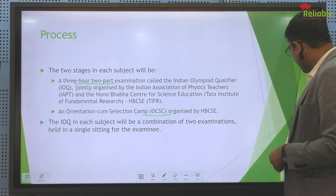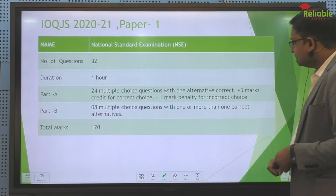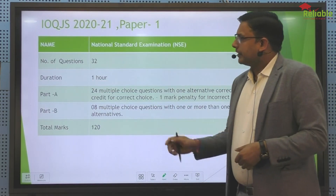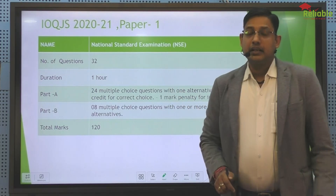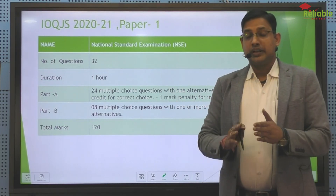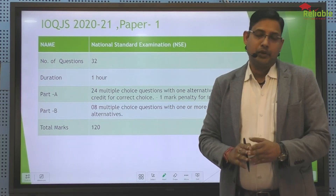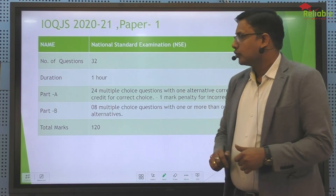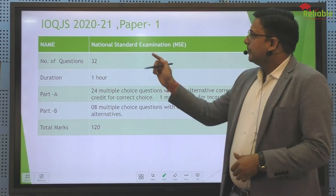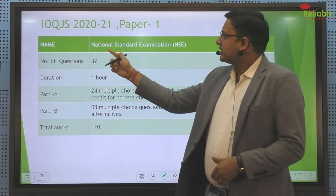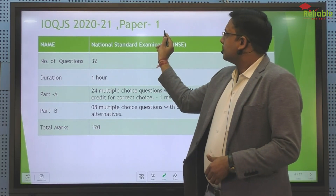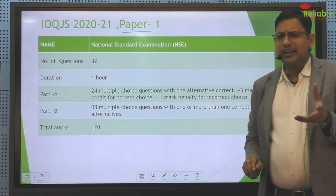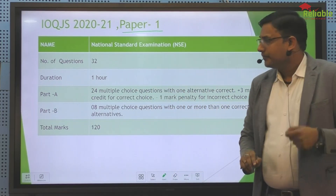Let us see what the paper pattern was. This paper pattern was given in the student browser. Yesterday, the 2:30 to 3:30 paper was done — that was the first paper, Paper 1, which stands for NSEJS level. The total was 32 questions, named Paper 1.